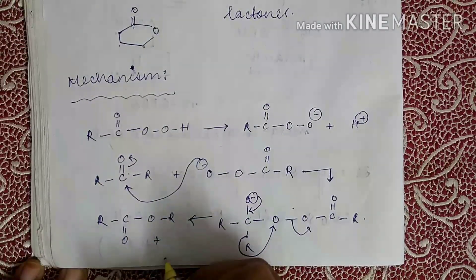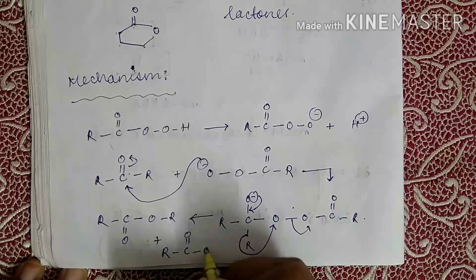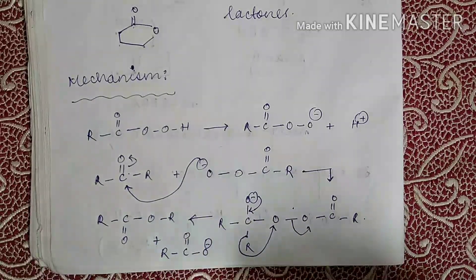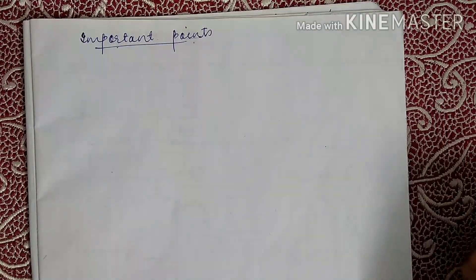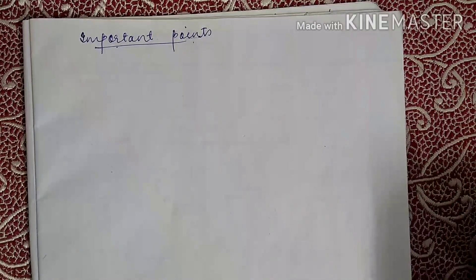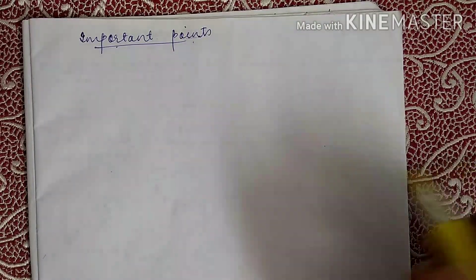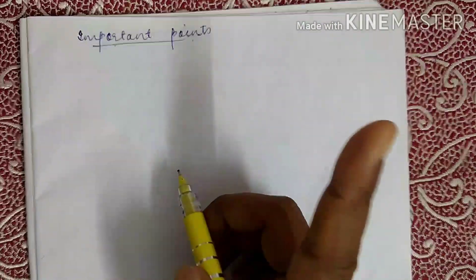Along with the corresponding carboxylate anion, which then accepts a proton from the medium to give the carboxylic acid. Now coming to some of the important points of Baeyer-Villiger oxidation: this reaction is catalyzed by acids. Electron-releasing groups in the ketone and electron-withdrawing groups in the per acid accelerate the rate of the reaction.